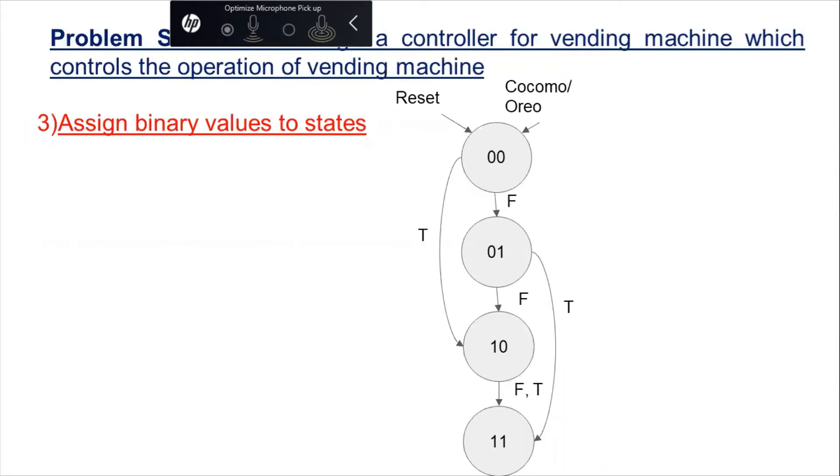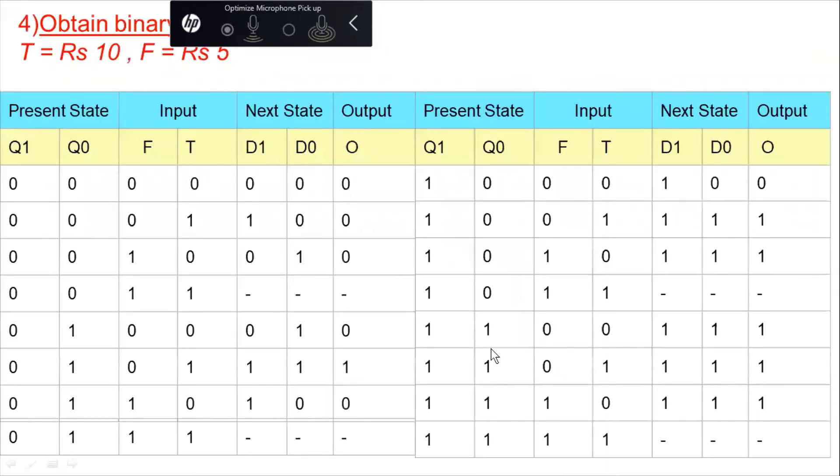So we have value of 00 for amount equal to 0, 01 for amount equal to 5, 10 for amount equal to 10, and 11 for amount equal to 15. Moving on towards our state table,